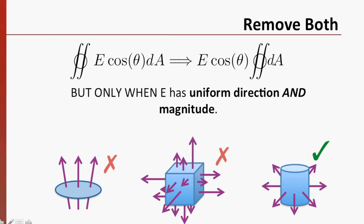If we want to move both the field and the cosine out of the integral, we need to fulfill both conditions. The left hand and center examples only fill one condition each. The example on the right has both, and would be ideal to use.